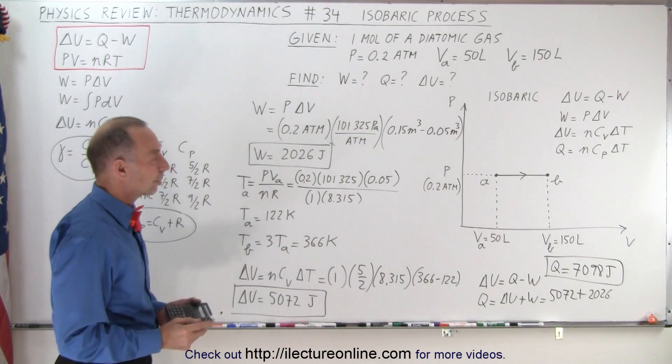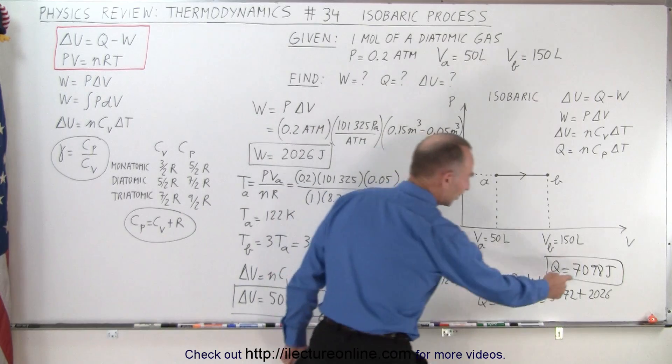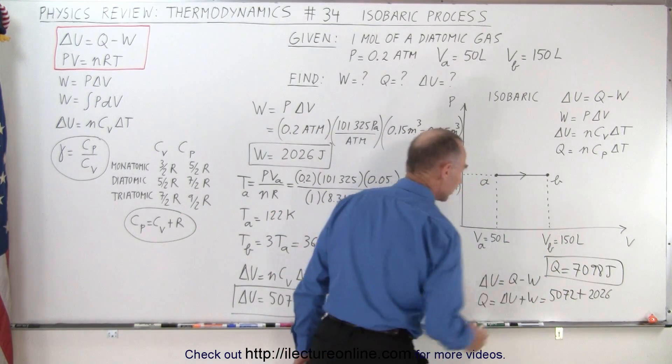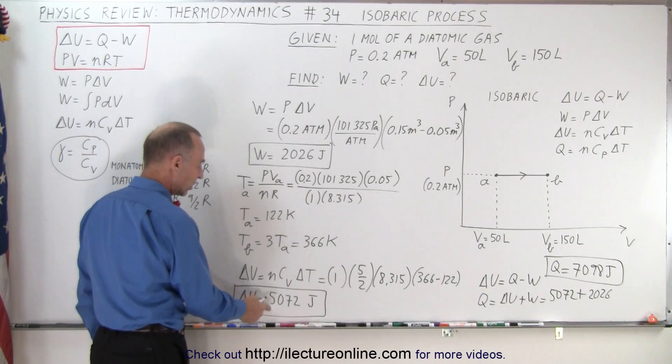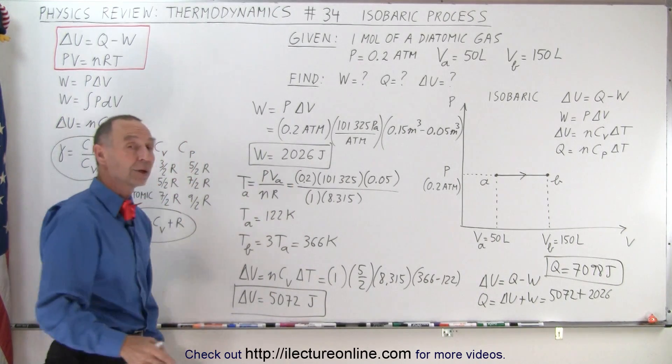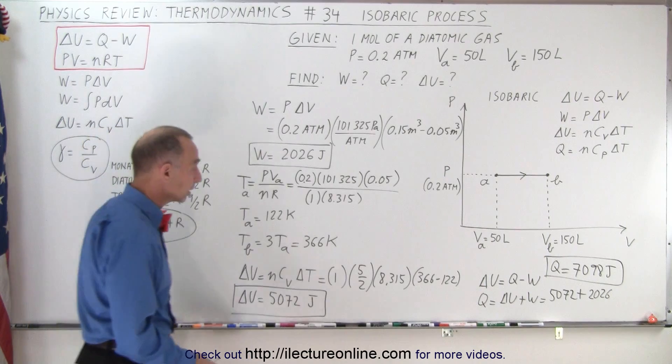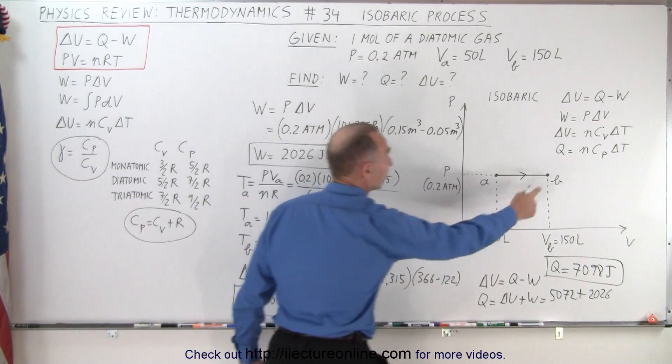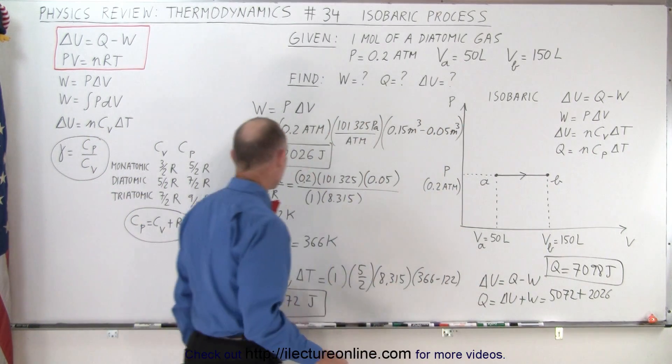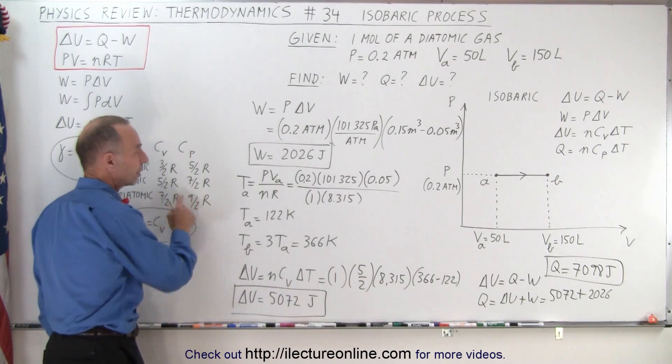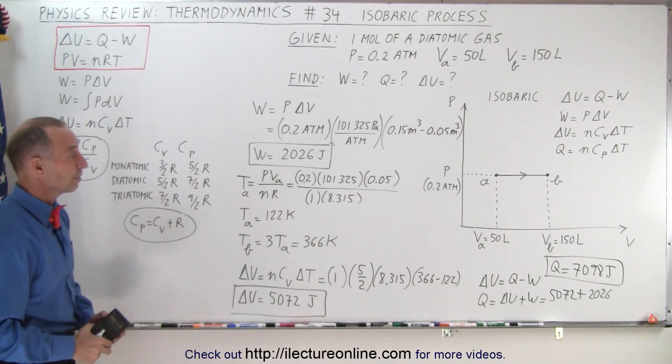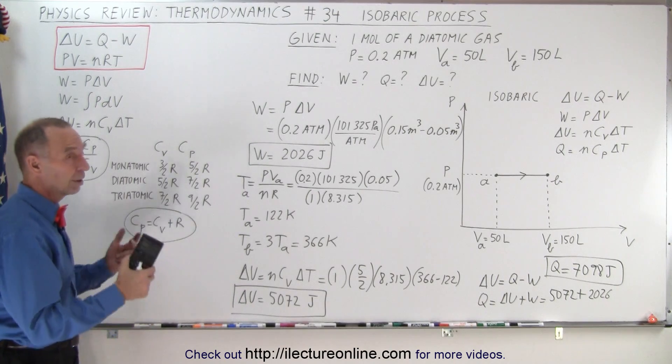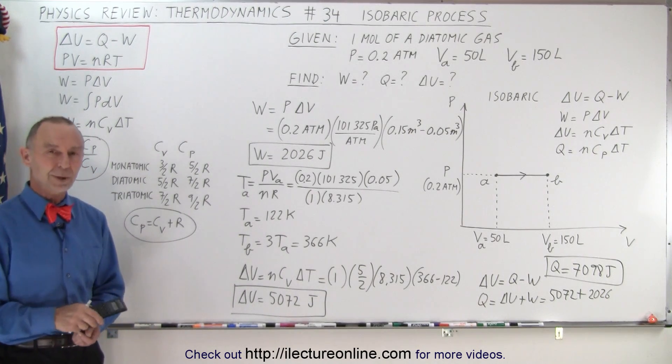In this isobaric process, we added a little bit over 7000 joules of heat. Part of that was used to do work, and part of it increased internal energy of the gas. Now, if you want to make sure you did this correctly, you can calculate Q by using this equation and use C_p, which in this case would be 7 over 2 R, to see if you get the same result. But I'm pretty confident that you would. And so here's a nice example of how to deal with an isobaric process.